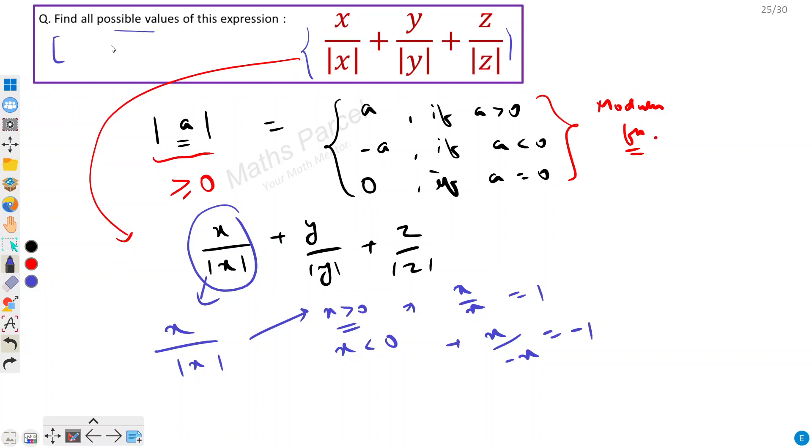Now here I have missed the condition in the question. So there would be a condition that all these values, all these x, y and z, all these variables they can't be 0. So these are non-zero real numbers. You can say x, y, z are non-zero real numbers.